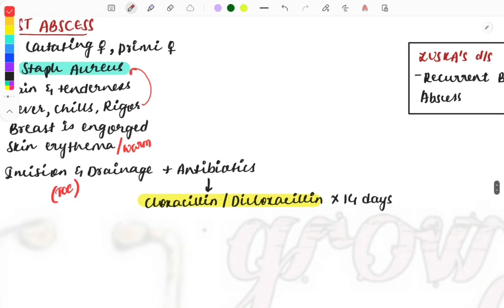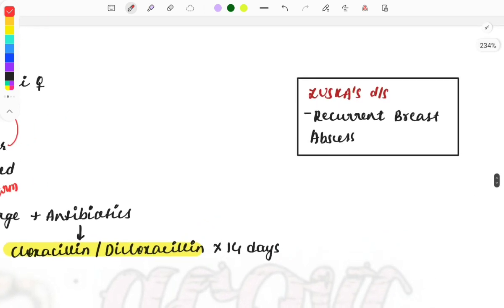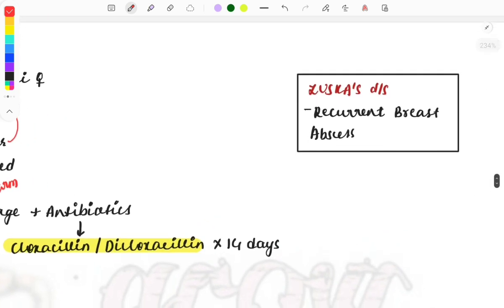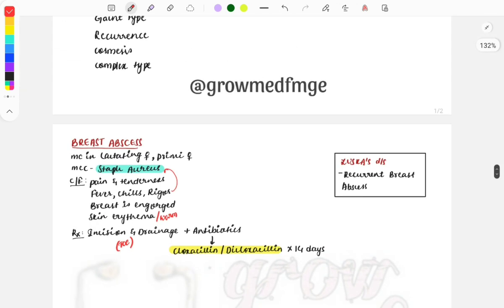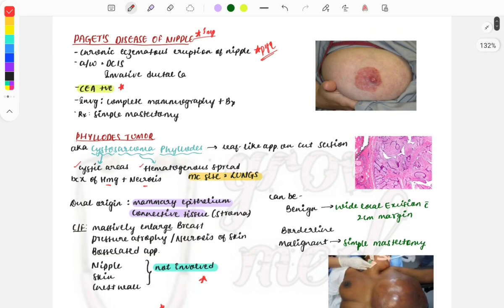Treatment is incision and drainage, which is the treatment of choice, plus antibiotics—cloxacillin or dicloxacillin for 14 days. There's another term: Zuska's disease, which is recurrent breast abscess.